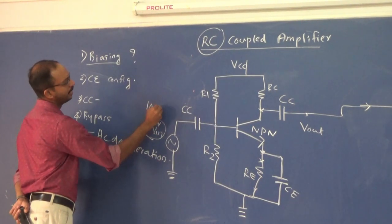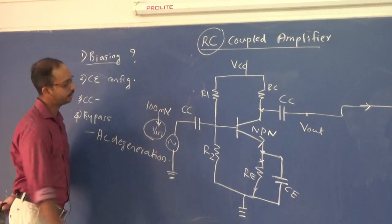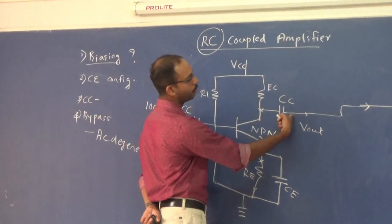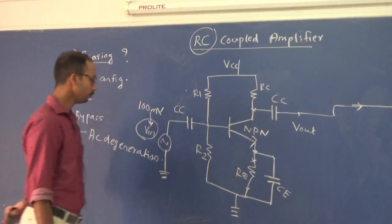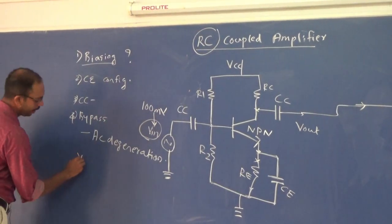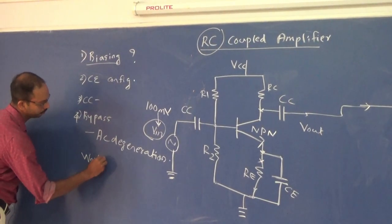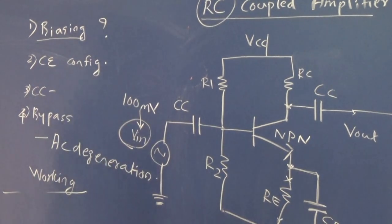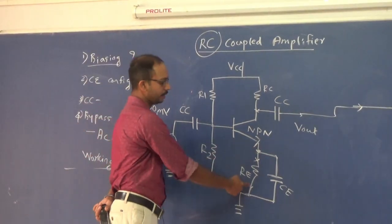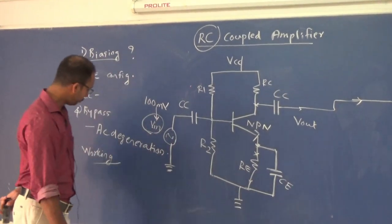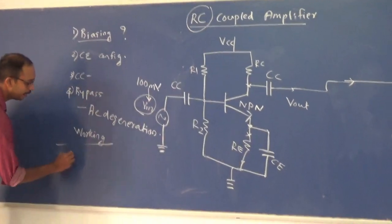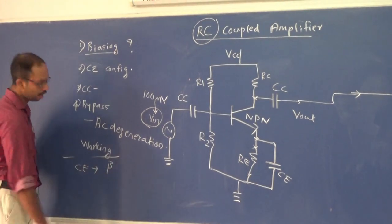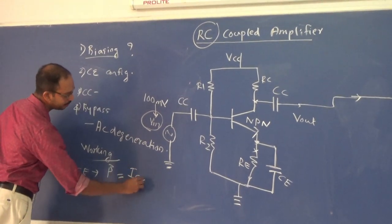The input voltage VIN is very small — approximately 100 millivolts — and we collect the amplified output at the collector. In common emitter configuration, the current gain beta is equal to IC divided by IB, that is collector current divided by base current.